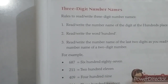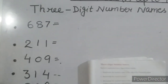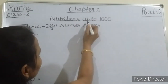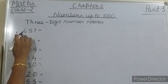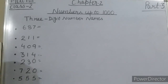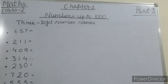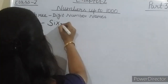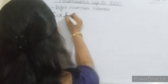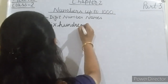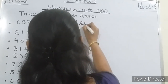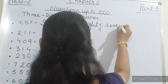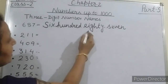So students, let's start. For example, I am giving you on the board. From chapter 2, Numbers up to 2000 — 3-digit number names. So 687. How will you write 687 in number name? Start writing with me. 687.